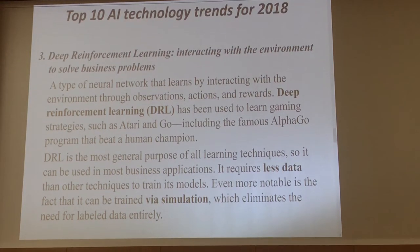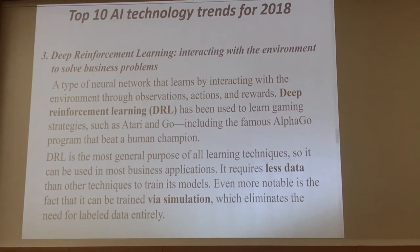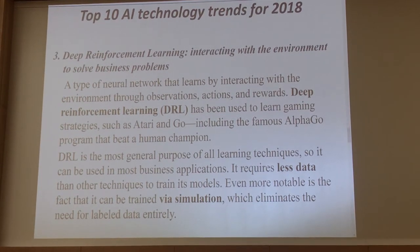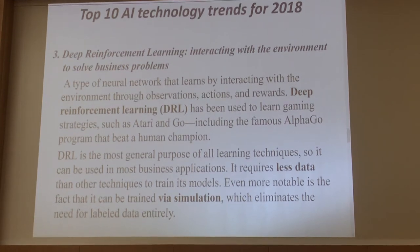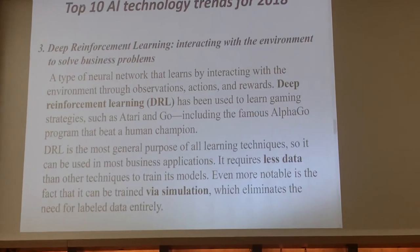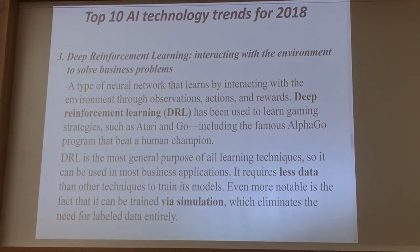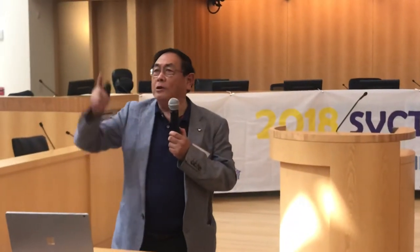Deep reinforcement learning is the algorithm that powers AlphaGo, the machine that beat the human Go champion. It can be trained via simulation. The reason the machine is almost unbeatable is that it can accumulate far more experience than a human — a human can play maybe three or four games a day because they need to eat and sleep. The computer doesn't get tired; it can play 24 hours a day, seven days a week, accumulating information, experience, and knowledge on an unbounded basis.